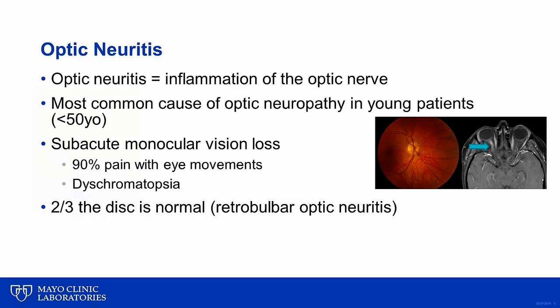Patients also often have dyschromatopsia, where colors are not as vibrant as they once were. The optic nerve appearance is normal two-thirds of the time because it is often retrobulbar. If there is disc edema, it is typically mild, similar to the photo on the right.